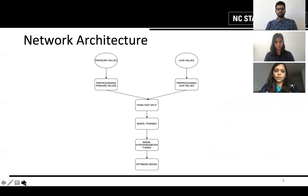The network architecture is shown in the figure. The leak values and the pressure values are first pre-processed. They are then given to the train-test split block which splits the dataset into 80 to 20. Then we have used two models.